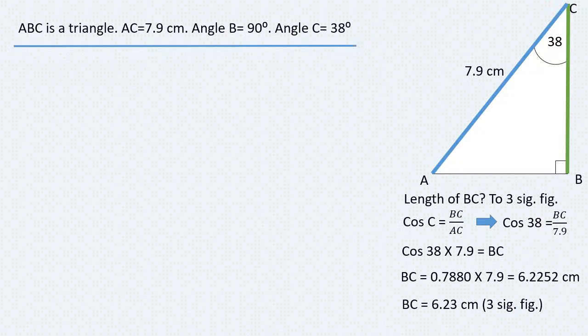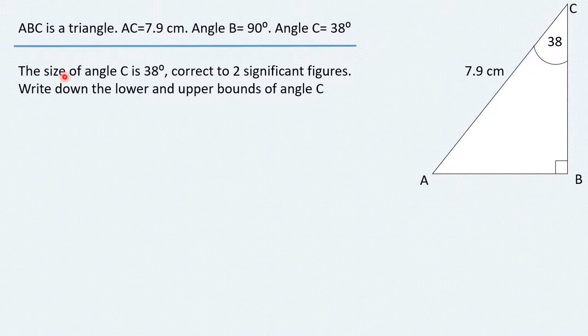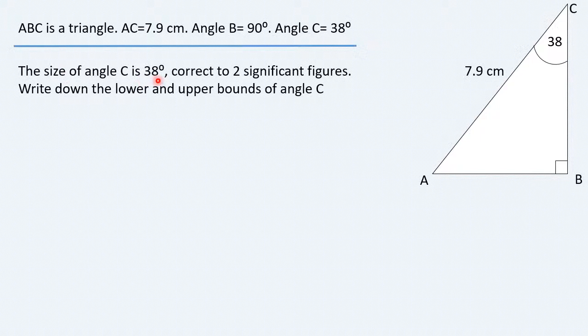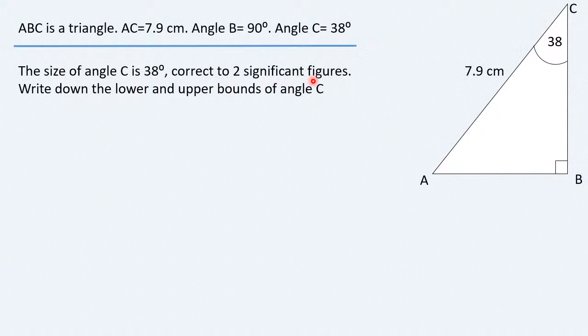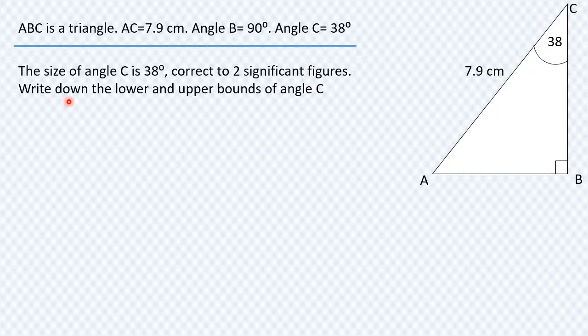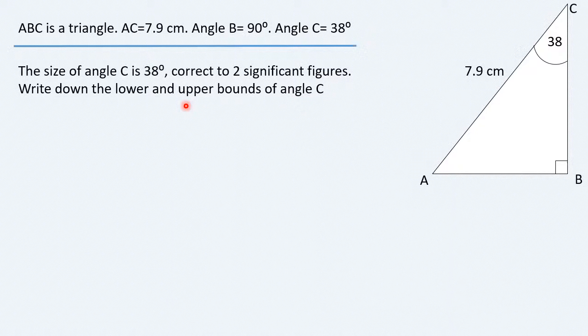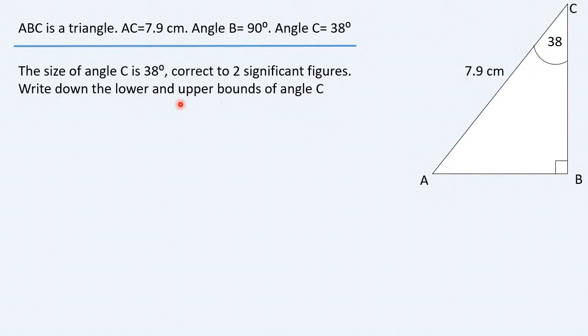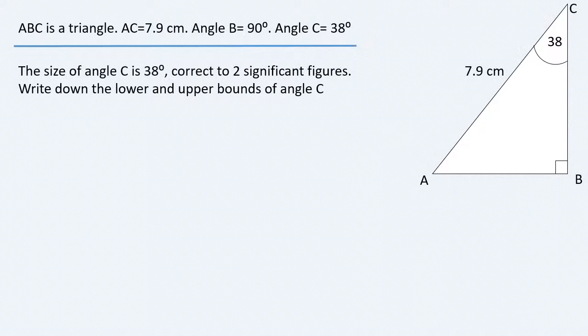We turn now to the second part of the question, which is a bit challenging. It says the size of angle C, which was given to be 38, is correct to 2 significant figures, and we have to write down the lower and upper bounds of angle C. In order to do this, we have to clarify some concepts first.